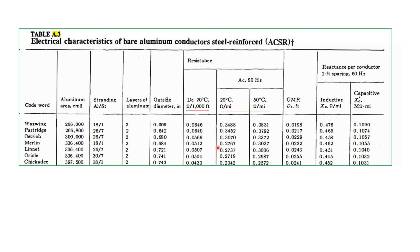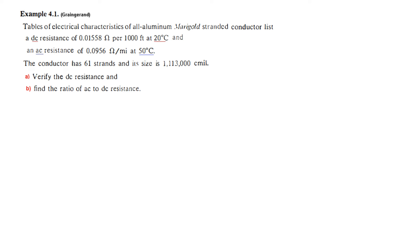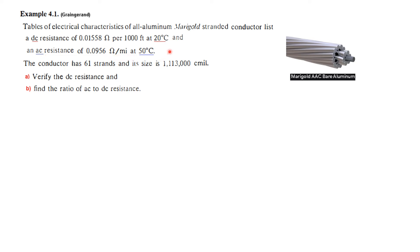For Example 4.1, the table of electrical characteristics of the Marigold ACSR aluminum conductor is used. The Marigold conductor has 61 strands and its size is 1,130,000 cmil. We need to verify the DC resistance value from the table, and then calculate the ratio of AC resistance to DC resistance.